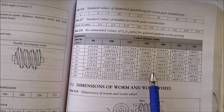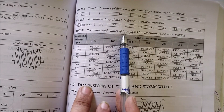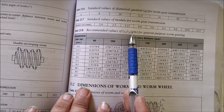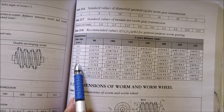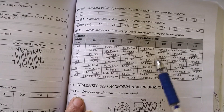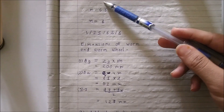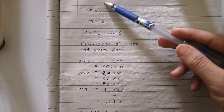Now we need to select a standard gearbox. From the standard gearbox table, a gearbox is represented by four values: Z1 (number of starts), Z2 (number of teeth on gear), q (diameter ratio), and module m. Our transmission ratio is 25:1 and the required module must be greater than 6.6 mm. We select the gearbox with module m = 8, which satisfies this condition. So our standard module is 8 and this is our selected gearbox.